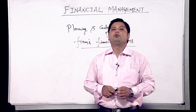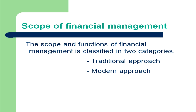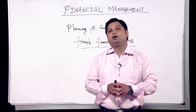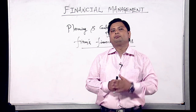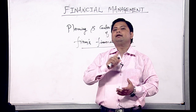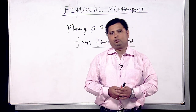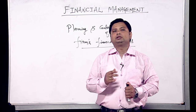The second topic is the scope of financial management, which covers the approaches to financial management. Historically, financial management is divided into two eras: before 1950s and after 1950s. Before 1950, financial management was not a separate discipline — it was considered part of economics, giving rise to the traditional approach. After 1950s, when it was separated from economics, the modern approach emerged.